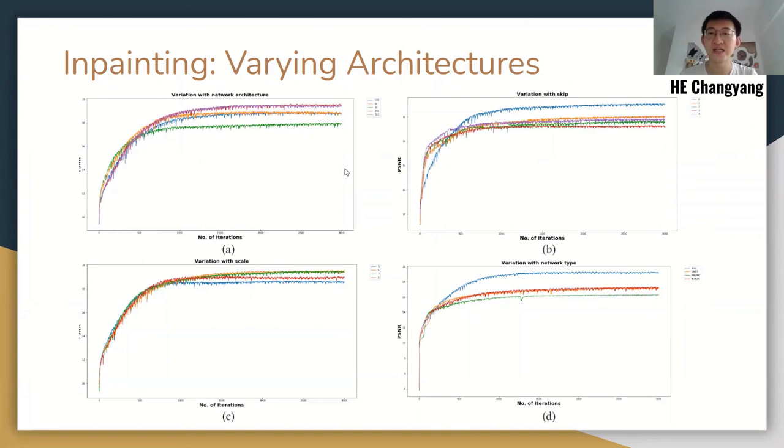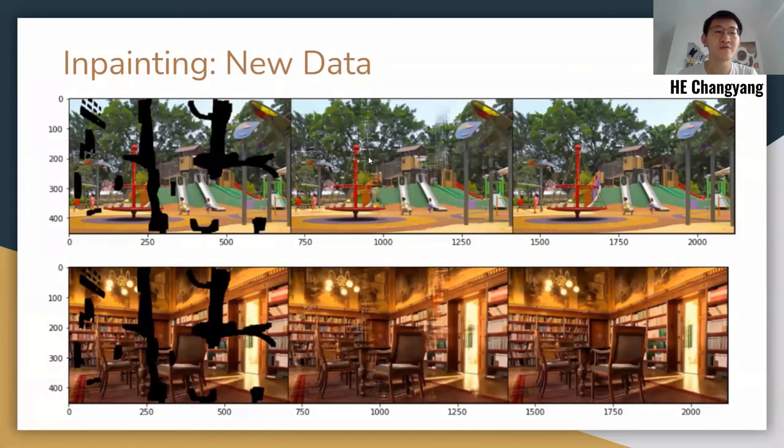From this figure, we can see the experiment result of inpainting with the variation of network architecture, skip, scale, and network type. Generally, wider and larger models generate better results. Skip network outperforms other models, and no skip outperforms skip connections. That means plain FCN achieves the best performance. We apply deep image prior for inpainting to two more outdoor and indoor scenes to verify the generalization ability. It can still generate convincing inpainting results, but there is still improvement space, especially for more complex outdoor scenes. You can see shadow here.